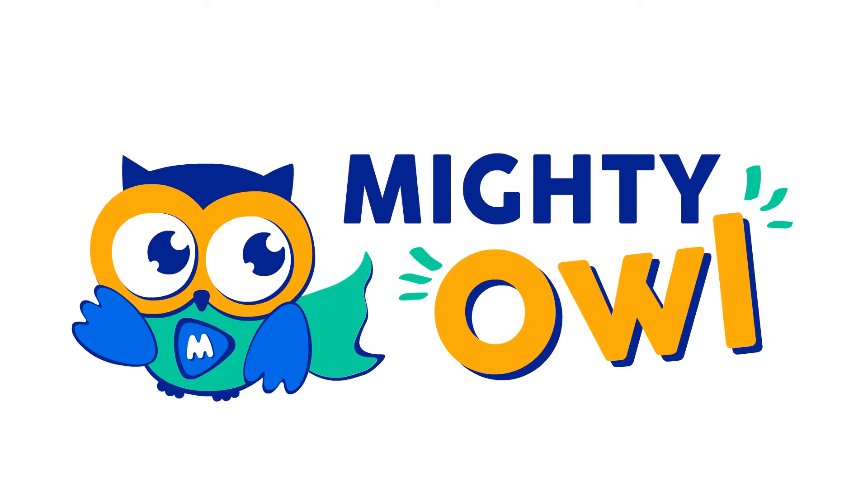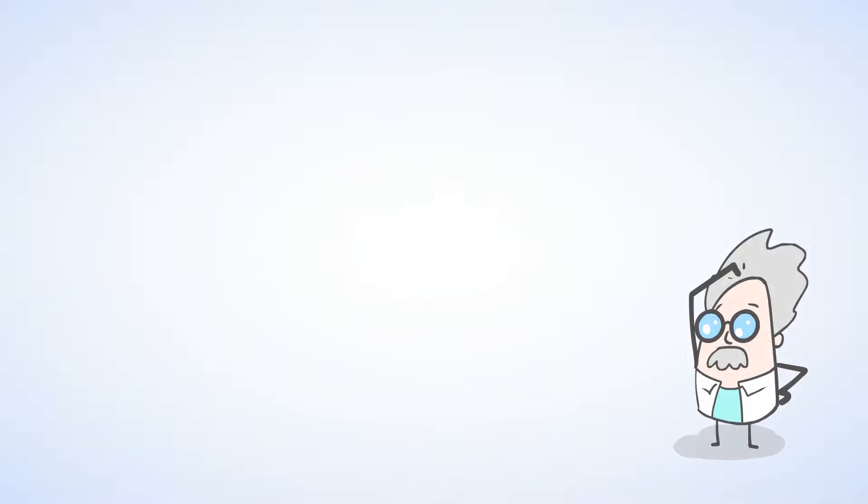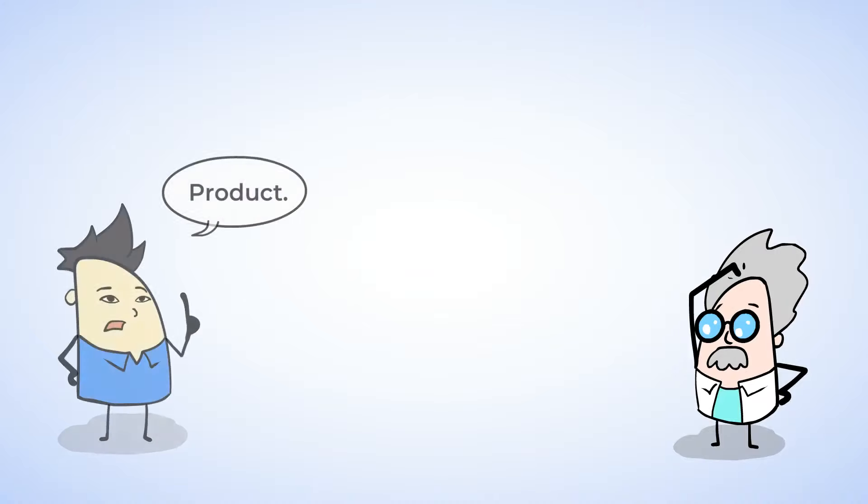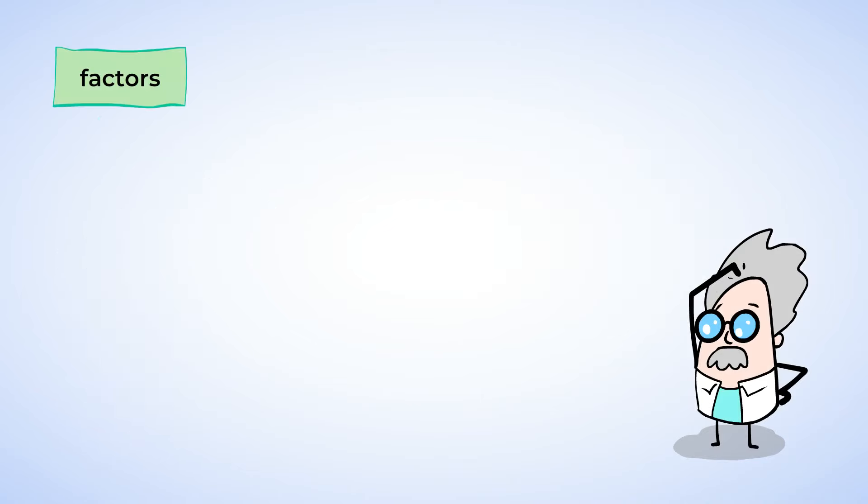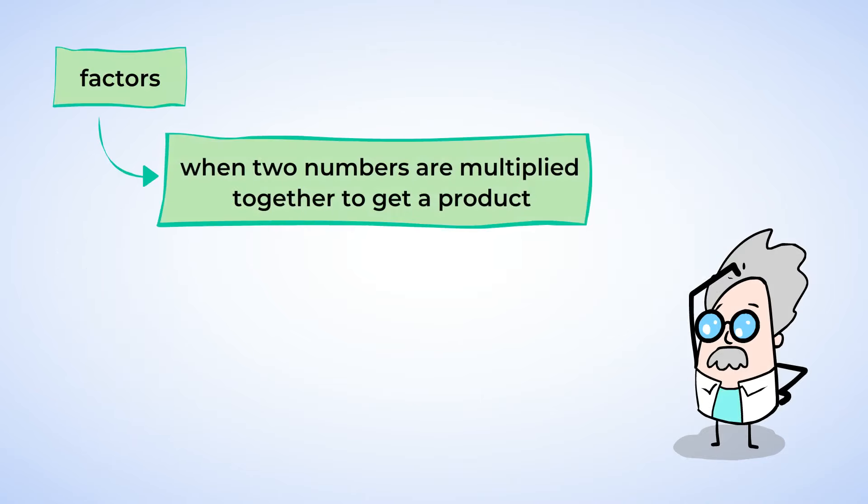Hello, this is MightyOwl. We already know that the product is the answer to a multiplication problem. But what about the numbers that are being multiplied? When two numbers are multiplied together to get a product, they are called factors.